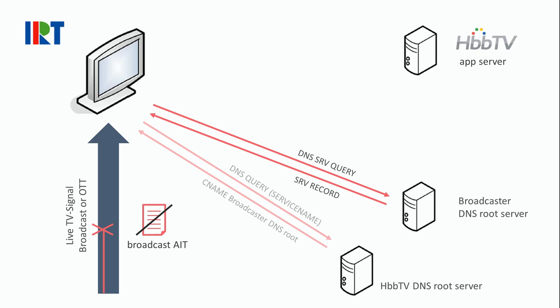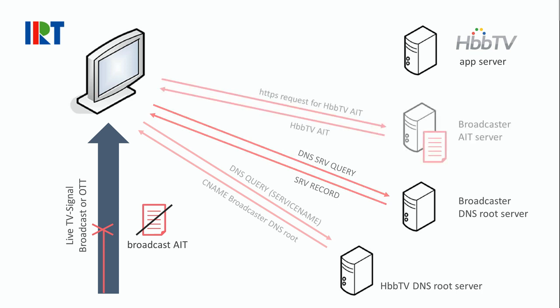With this information, the HbbTV receiver can make a third request, this time to the web server which hosts the AIT file. When this file is delivered to the HbbTV receiver, the receiver has exactly the same AIT information as it is delivered via broadcast in the regular cases.